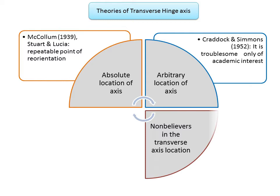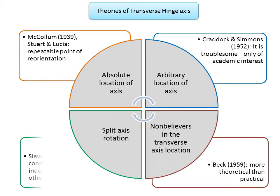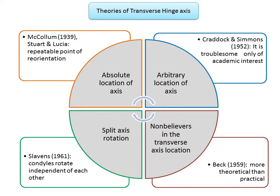Group three — non-believers in transverse axis location: this group believes it is impossible to locate the terminal hinge position with accuracy. Beck in 1959 proposed that the concept of transverse hinge axis is more theoretical than practical. Group four — split axis rotation: believers in the pantographic theory believe in the split axis, where each condyle rotates independently. Slaven stated that by definition an axis is always a line, and is invariably perpendicular to the path or plane of rotation, meaning the transverse axis of each joint is a line perpendicular to the same plane of opening and closing.